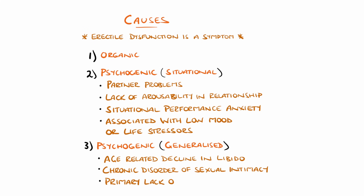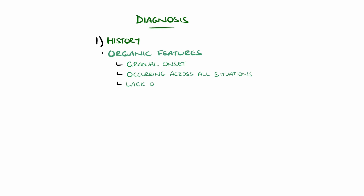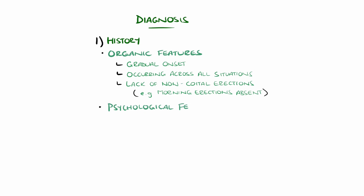As erectile dysfunction is itself a symptom, it is important to establish the underlying cause. The history is crucial and gives the largest clue as to the cause. Organic causes are more likely if there is a gradual onset, it is occurring in all sexual scenarios including with the partner and self-stimulation, and there is a lack of non-coital erections, for example morning erections. In contrast, psychological causes tend to be suggested by a sudden onset, being variable in different situations, and preservation of non-coital erections.